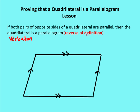The first way to prove that a quadrilateral is a parallelogram is if we have both pairs of opposite sides of a quadrilateral that are parallel, then the quadrilateral is a parallelogram. So by definition, if I have two opposite sides which are parallel, then the quadrilateral is a parallelogram.